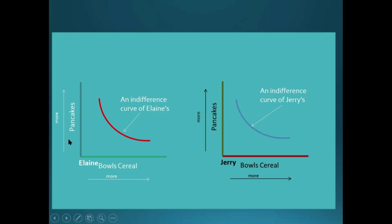In this graph, we have the number of pancakes that Elaine has and the number of bowls of cereal. The further you move to the right along this graph, it implies that Elaine is getting more bowls of cereal. And the further you move up, it implies that Elaine is getting more pancakes. We then plotted all of the different combinations of the two goods that left Elaine with the same level of utility — that's all the combinations that Elaine was indifferent between.